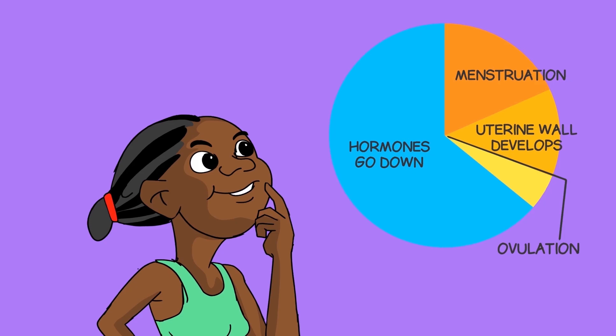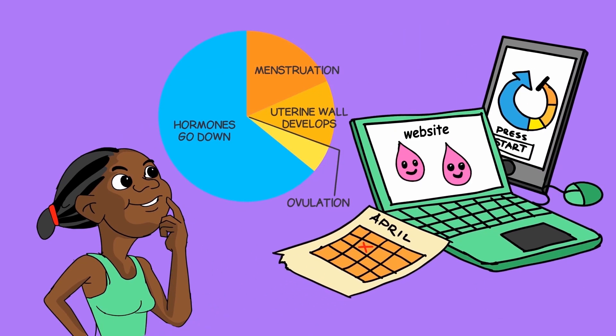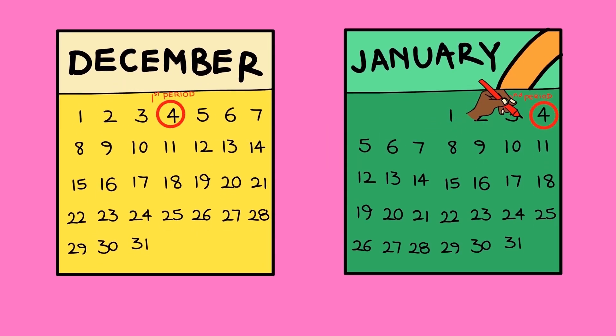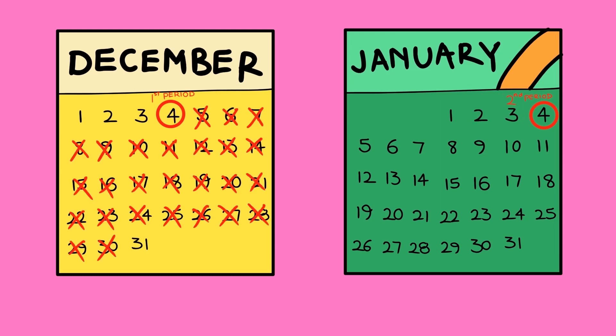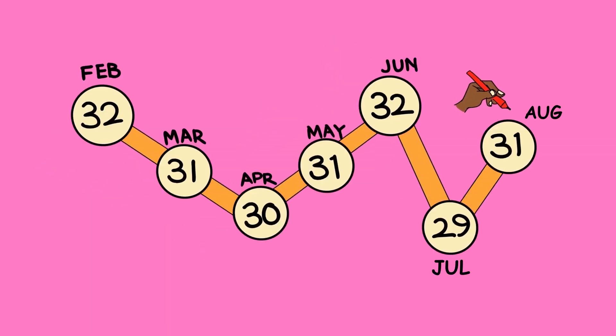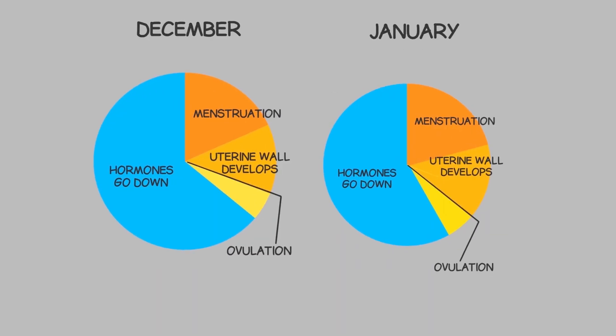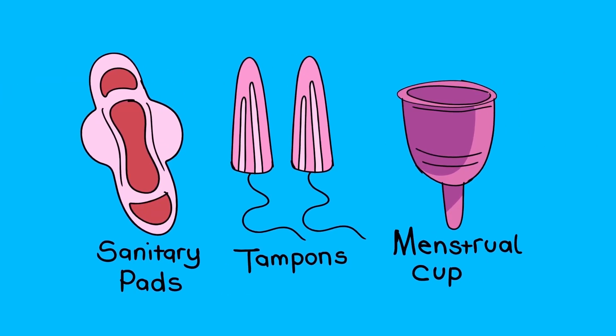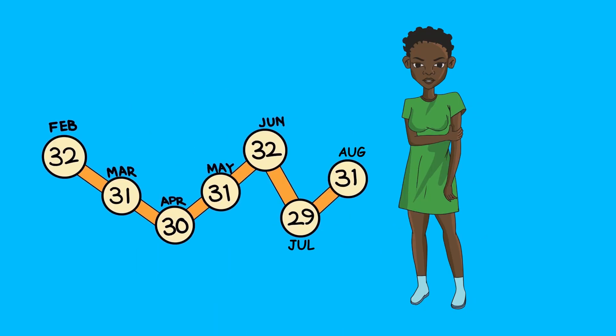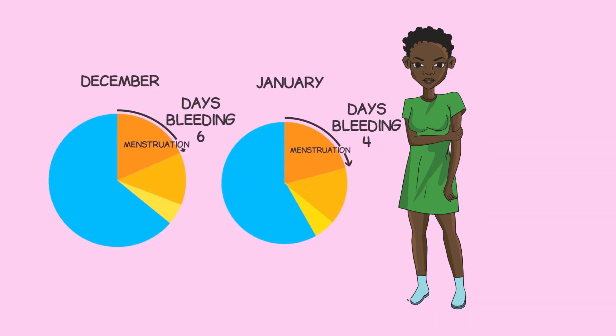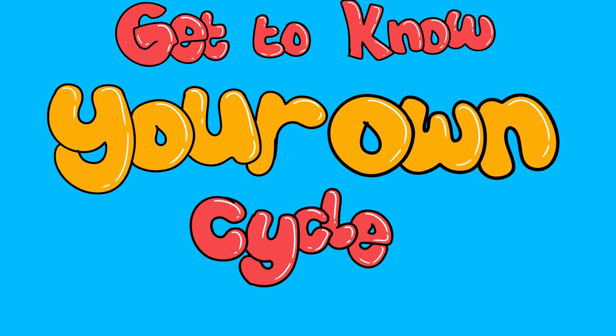Knowing how long your cycle is and how much it varies can help you predict when your next period will come so you can be prepared. Whether you use an app, online tool, or a paper calendar and a pen or pencil, you can start by noting the first day of your period and then the first day of your next one, and count the number of days in between. If you do this every month, after a while you may begin to see a pattern of how many days in between your periods and how long your cycle usually is. You can also track how many days you bleed per month. Remember, it is normal, especially for adolescents, to have irregular periods where the length in between periods and the length of days of bleeding varies greatly from month to month. All the more reason to get to know your own cycle.